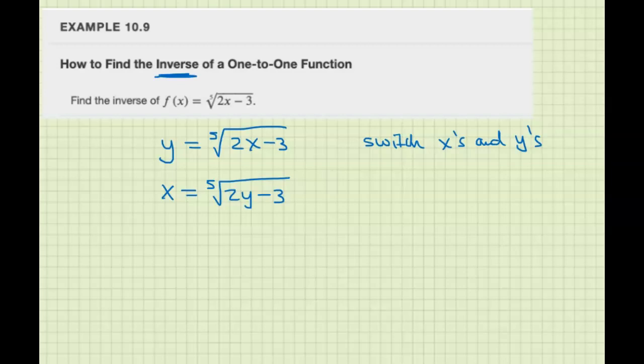y is stuck inside the fifth root. So we need to take both to the fifth power to cancel out the radical. We get x to the 5 equals 2y minus 3.